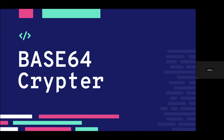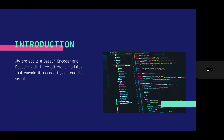Unfortunately I won't be able to share my screen today as I have not yet gotten a webcam and my MacBook camera does not work. So my project was a Base64 encryptor and decryptor. It has three different modules: one that encodes, one that decodes, and since the script is constantly running over and over after you finish using one of these, there's another module to end the script.